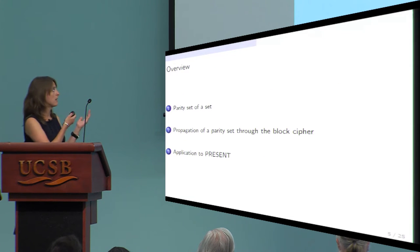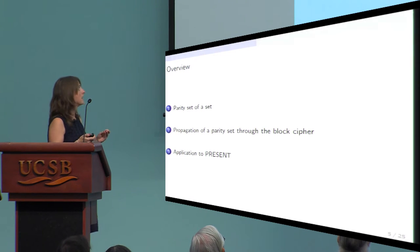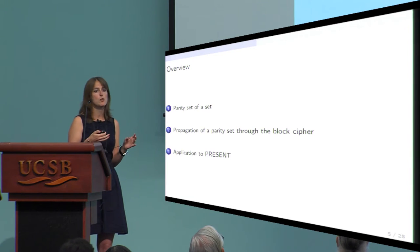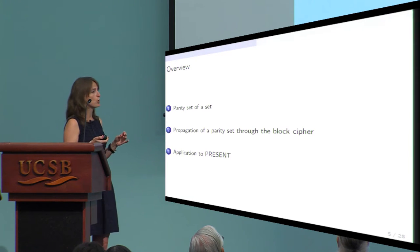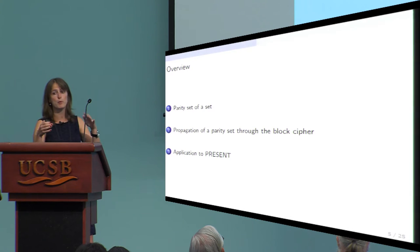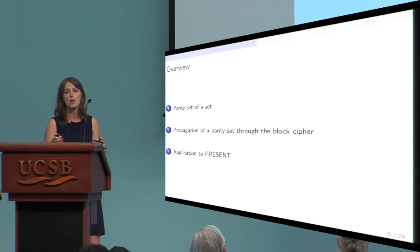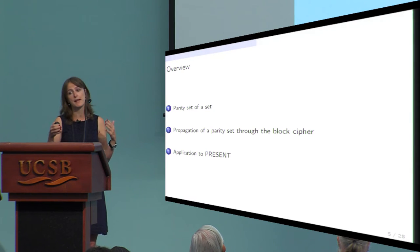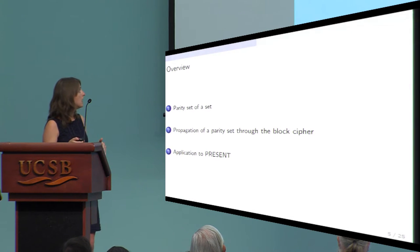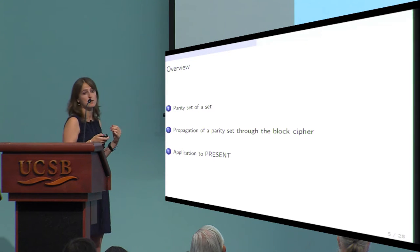The outline of the talk: I will introduce the main notion of the paper, the parity set of a set, show how it links to the division property and gives a nice description of sets having the division property, then show how to use it to construct distinguishers for iterated SPN block ciphers, and finally show an application with a low-data distinguisher on the lightweight block cipher PRESENT.